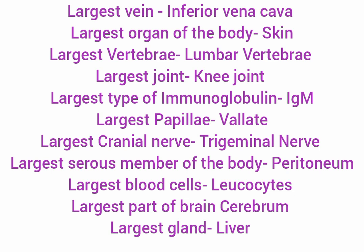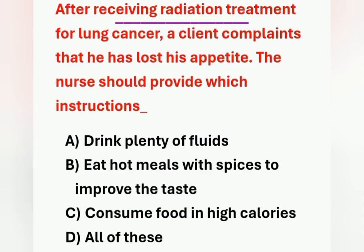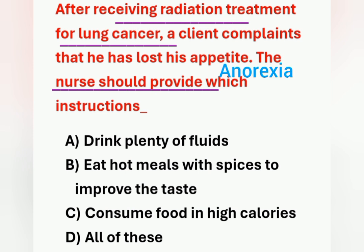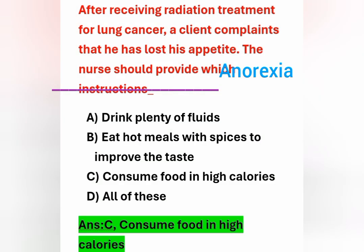Next question: after receiving radiation treatment for lung cancer, a client complains that he has lost his appetite. What instructions should the nurse provide? Options: Option A – drink plenty of fluids. Option B – eat hot meals with spice to improve the taste. Option C – consume food high in calories. Option D – all of these. The patient is experiencing anorexia, which means loss of appetite. The nurse should instruct the patient to consume food high in calories. Option C is the correct answer.